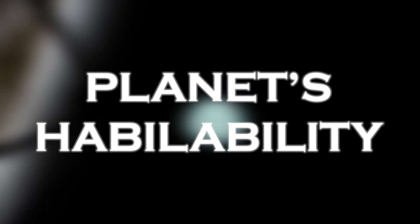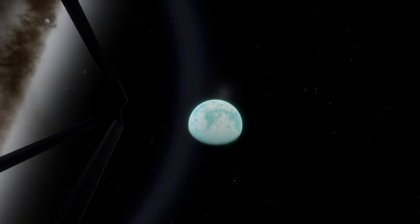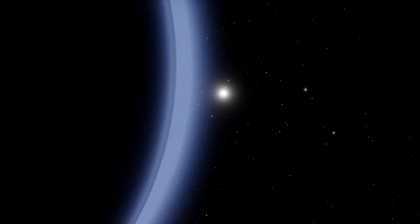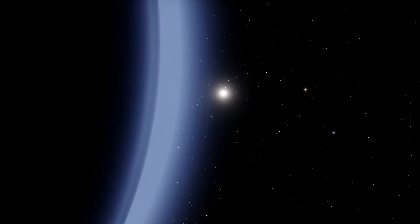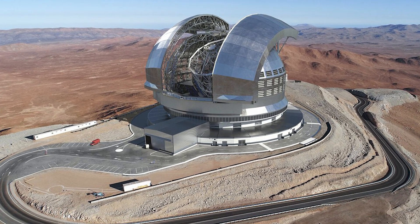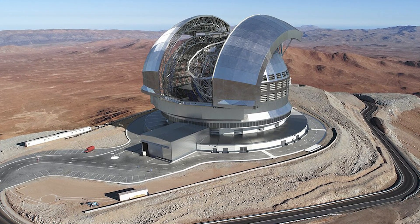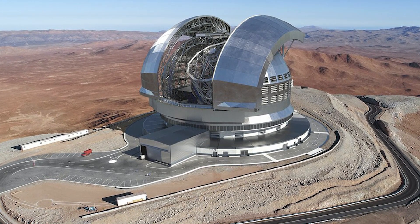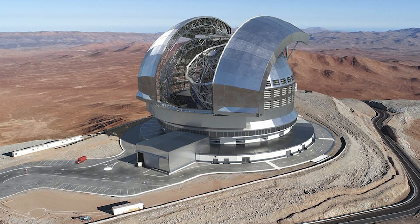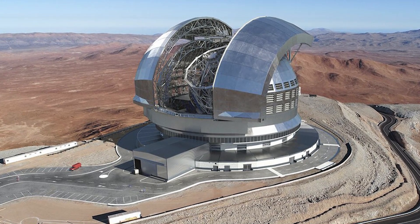It is important to keep in mind that the JWST cannot explore all potential habitable worlds, as it has limited capabilities and can only observe some of the exoplanets closest to Earth. Therefore, astronomers are turning to ground-based observatories such as the Extremely Large Telescope, the ELT, which is expected to become operational in 2028, and allow for a deeper investigation of the atmospheric structure of distant exoplanets.